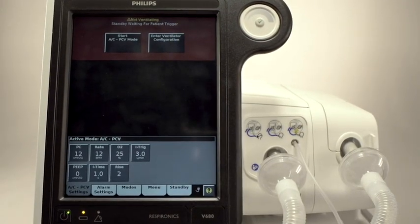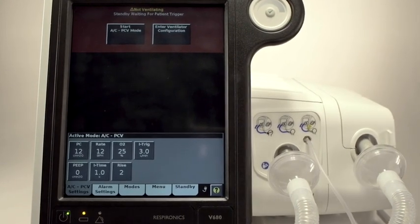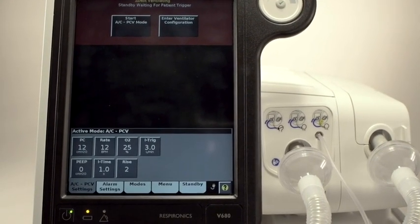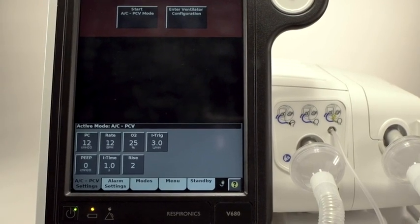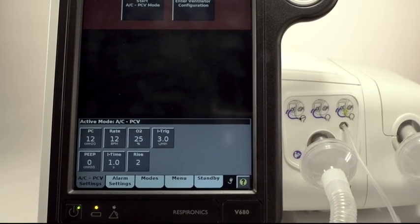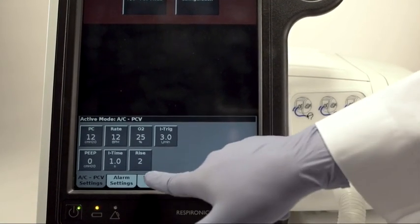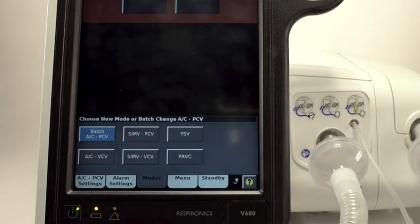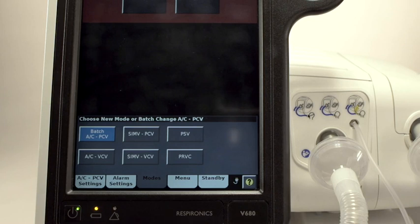We can either start immediately with the default mode in Settings, or we can select a new mode in Settings. As before, we can also tweak any alarm setting prior to activating ventilation. Touch the Modes button. You can see that the available modes have changed for Dual Limb Invasive Ventilation, Assist Control Pressure or Volume Ventilation, SIMV Pressure Control or Volume Control, and Pressure Support and Pressure Regulated Volume Control, or PRVC.